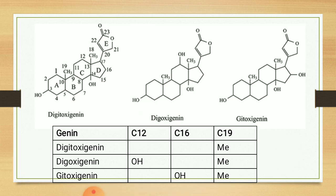In summary tabulated form: the three genins are digitoxigenin, digoxigenin, and gitoxigenin. In digitoxigenin, two hydroxyl groups common to all are at positions 3 and 14. In digoxigenin, there is an additional hydroxyl group at carbon-12. In gitoxigenin, there is a hydroxyl group at carbon-16. This covers the aglycone part of cardiac glycoside. Now see the second part, that is the sugar part of cardiac glycoside.